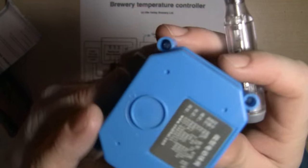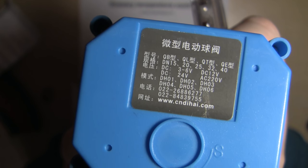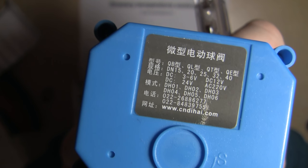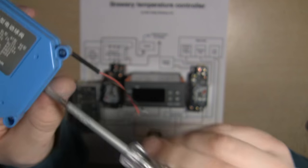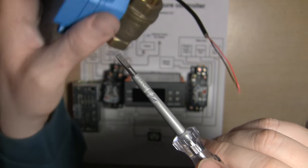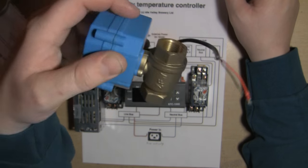It opens and closes on command when you put some voltage across the terminals. This is the 12 volt version and it's the DN15. If you want to just have a little snapshot of what we've got written on the top, there you go.